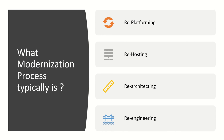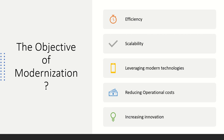It depends on the organization what they want to do. Each of these strategies has its own benefits and challenges, and organizations will carefully consider their specific needs and requirements when deciding which strategy to go with. If you are working on a mainframe modernization project, either they are trying to re-platform, re-host, re-architect, or re-engineer the existing system. The main objective of modernization is improving efficiency and scalability, leveraging modern technology, reducing operational cost, and increasing innovation.